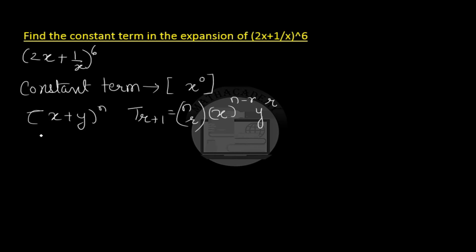Similarly, we can write the r plus 1th term in the above expansion. So n which is 6 here, so 6 choose r. The first term is 2x here, it will be raised to the power of 6 minus r. And the second term which is 1 by x will be raised to the power of r.